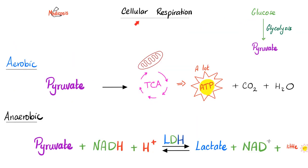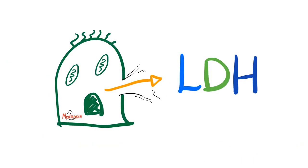That was the story of the last video. If you have oxygen — aerobic — you get tons of energy, carbon dioxide, and water. But if you do not have oxygen — anaerobic — you get lactate or lactic acid and little ATP. The beautiful enzyme that converts pyruvate to lactate or lactate to pyruvate is lactate dehydrogenase. You can find it in almost every cell in your body, because at some point your cell might run out of oxygen and needs a backup plan.